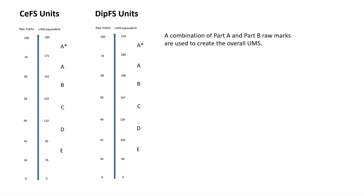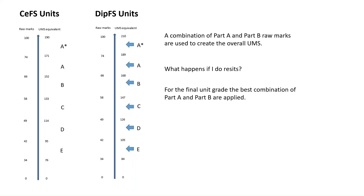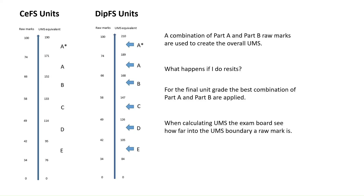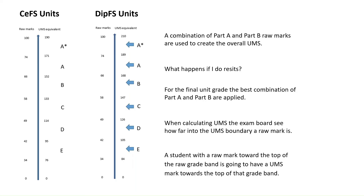A combination of Part A and Part B raw marks are used to create the overall UMS. What happens if you do resits? Well, the good news is that for the final unit grade, the best combination of Part A and Part B are applied. When calculating UMS, the exam board sees how far into the UMS boundary a raw mark is. For example, looking at the Diploma in Financial Studies, for an E it is between 84 UMS and 105 UMS, or 34 and 42 raw marks. So if you got 41 raw marks — towards the top of the raw mark band — it's going to have a UMS mark towards the top of that grade band, equating to somewhere between 103 and 104 UMS — the top UMS score for E.